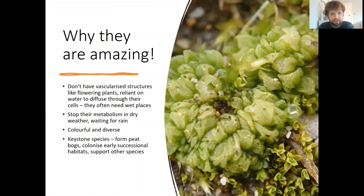Bryophytes are amazing for a variety of reasons. They don't have vascularized structures like flowering plants, which means that they don't have tubes carrying water and sugars to different parts of the plant. This means they rely on water to diffuse throughout their cells, so they often need wet places in which to live. When it's not wet, such as in the spring and summer months, they can stop their metabolism and just curl up and wait for the wet weather to come, and then unfurl and flourish in the winter and autumn months.